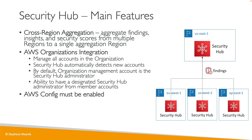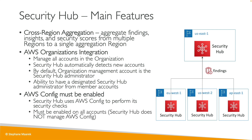You must enable AWS Config no matter what for Security Hub to work, because many of the security checks are using AWS Config. You must make sure that Config is enabled on all accounts. Security Hub does not manage your Config configuration, so make sure on your own that Config is enabled across all your member accounts in your organizations.